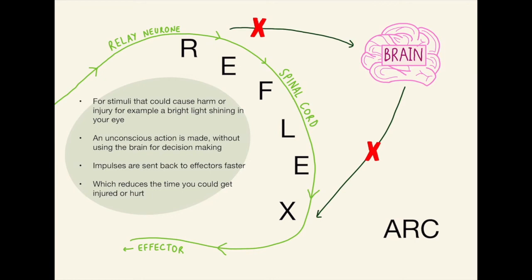Next, we have a reflex arc. This is purely for stimuli that could cause harm. So, using the examples I used before — the bee sting, or if you touch something hot — this would be a reflex action. It basically just skips out the brain and uses our own reflex to deal with the problem.